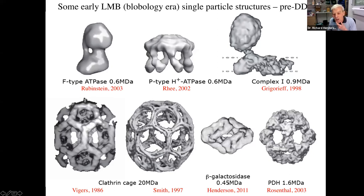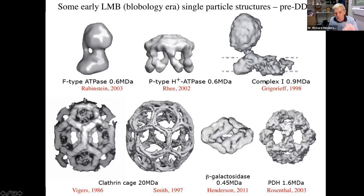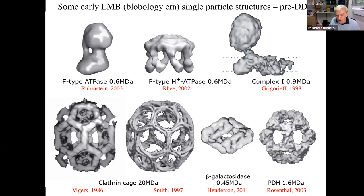Beta-galactosidase we tried very hard to work on back in 1997, but the first map we thought was truly believable was done on film in 2011. Pyruvate dehydrogenase from Peter Rosenthal's work gave nine angstrom resolution. Nico, when writing the first version of Frealign, focused on mitochondrial complex one — 22 angstrom resolution. These were all blobby structures, 10, 20, or 30 years ago, but it was clear it was going to work; it just needed a lot of developments to be made.